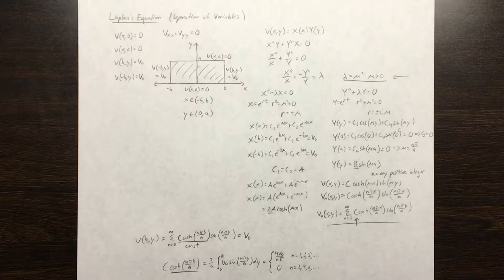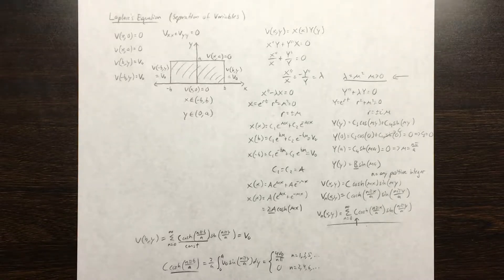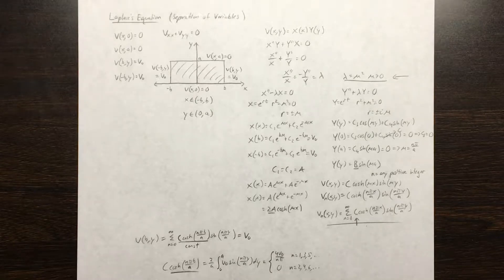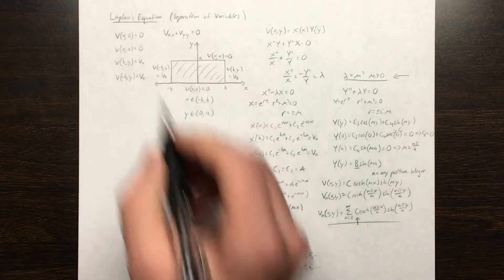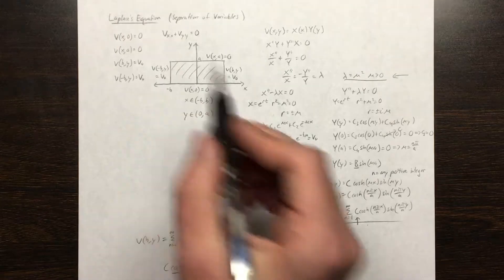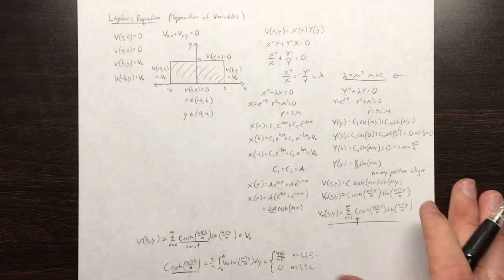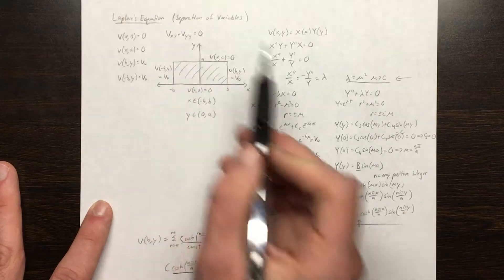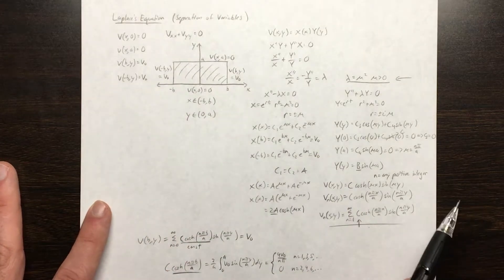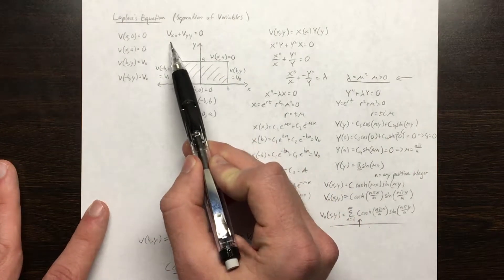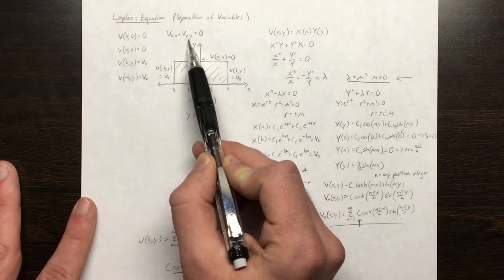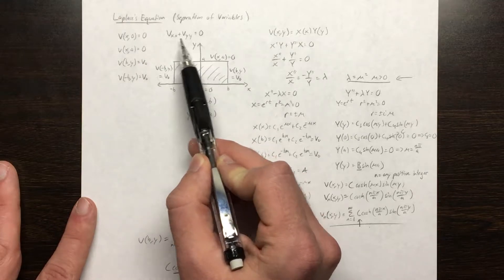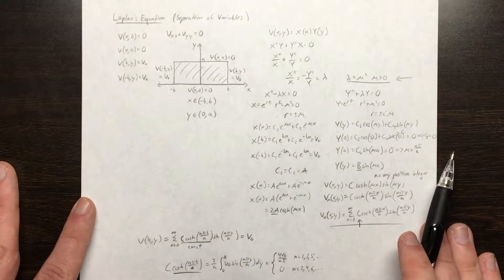The method of separation of variables is a common method used to solve partial differential equations such as the heat equation, the wave equation, or in this case Laplace's equation. Here is Laplace's equation in 2D: it is the second partial derivative with respect to x plus the second partial with respect to y equals zero, where v is the potential function.